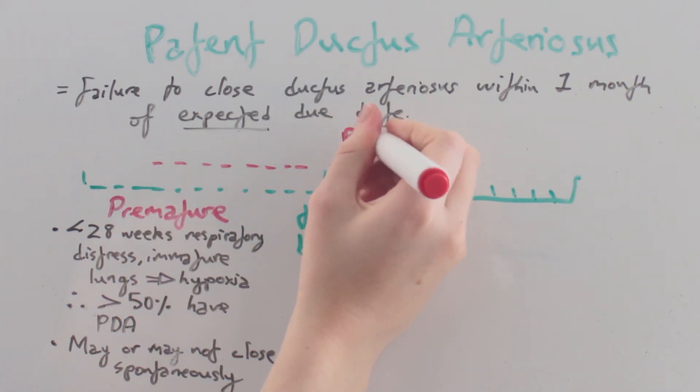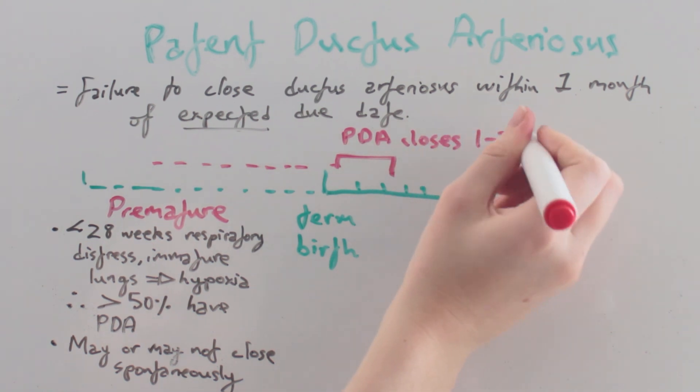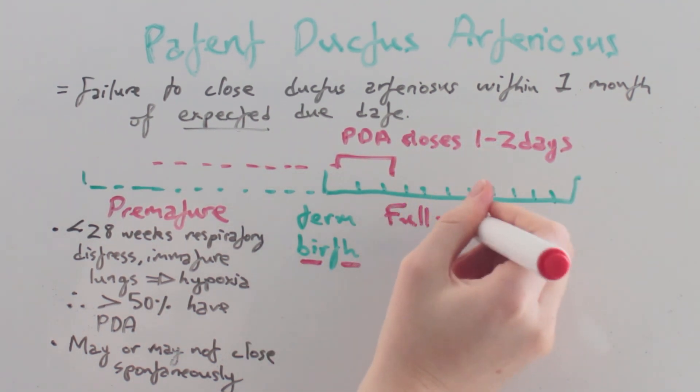As we know, the ductus usually closes within one to two days of a term birth, but PDA can also occur in babies born at full term.